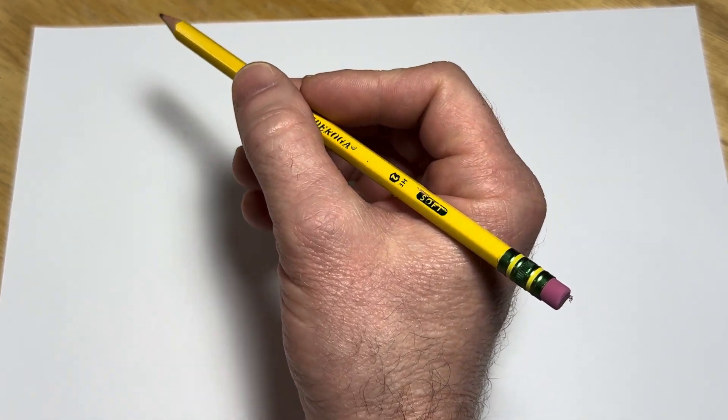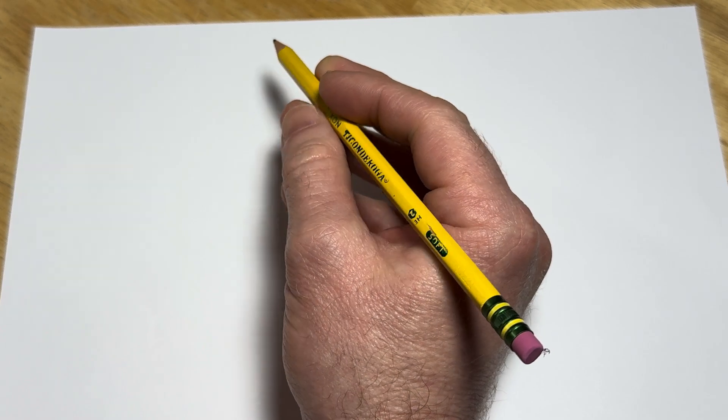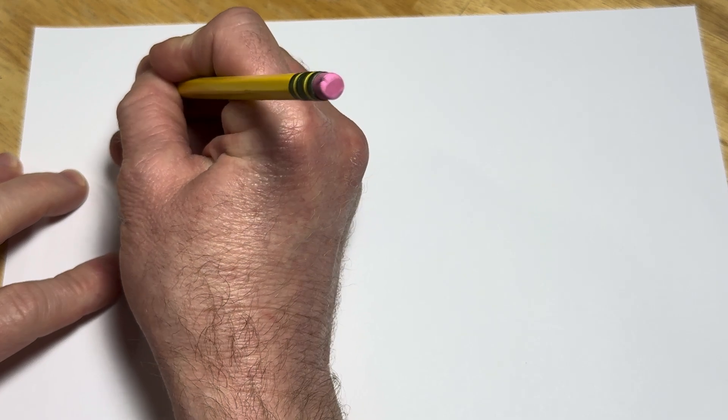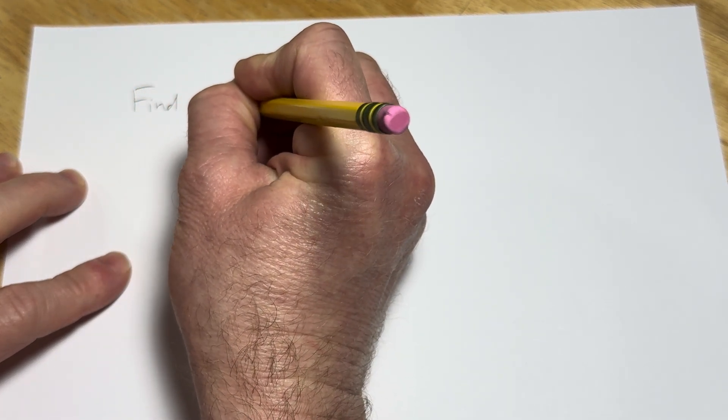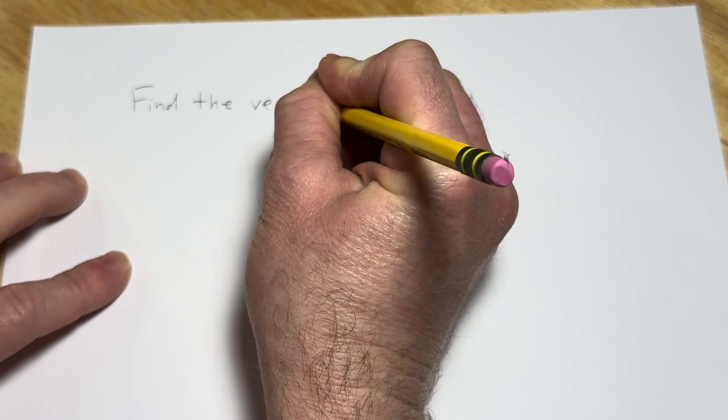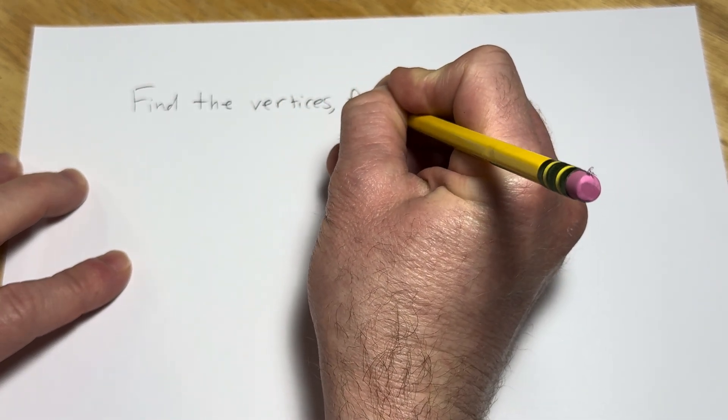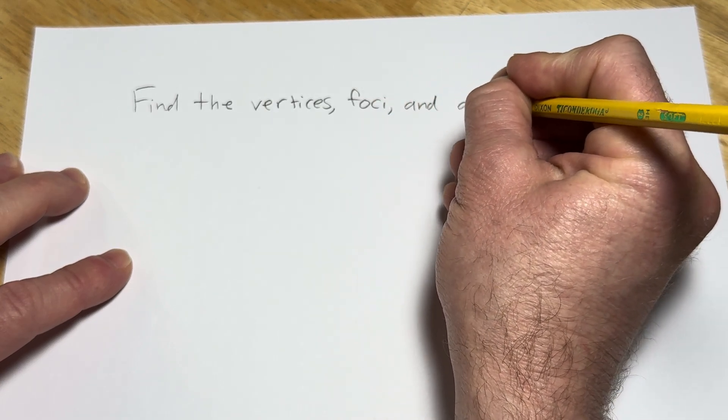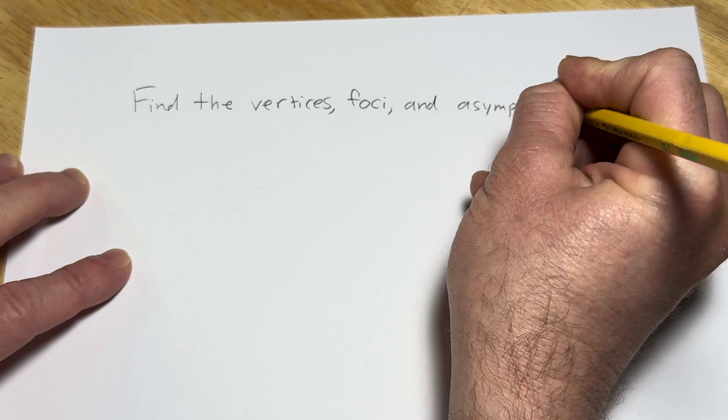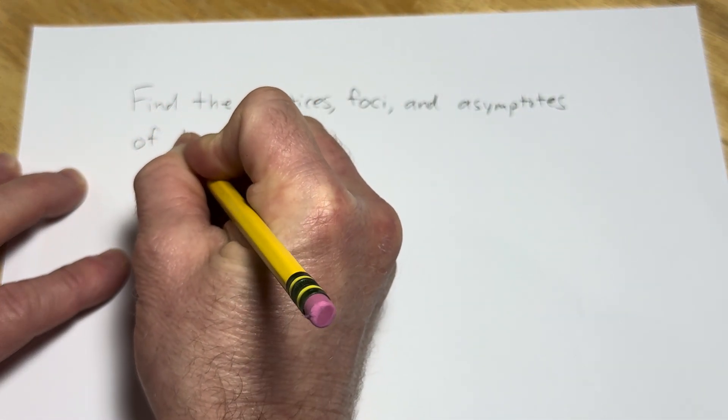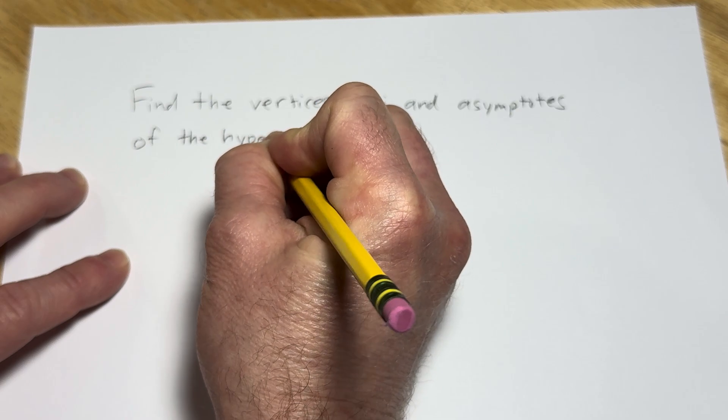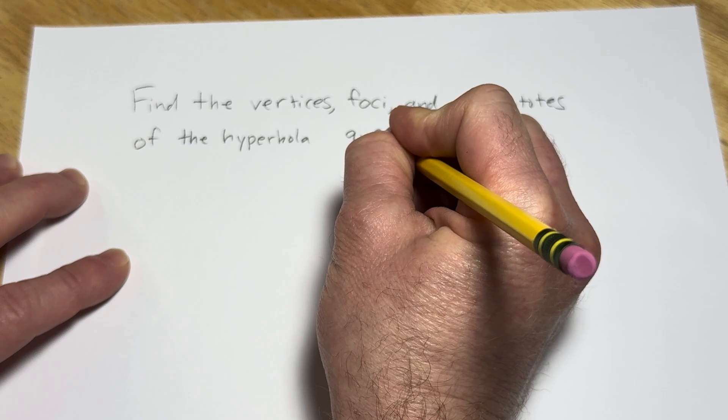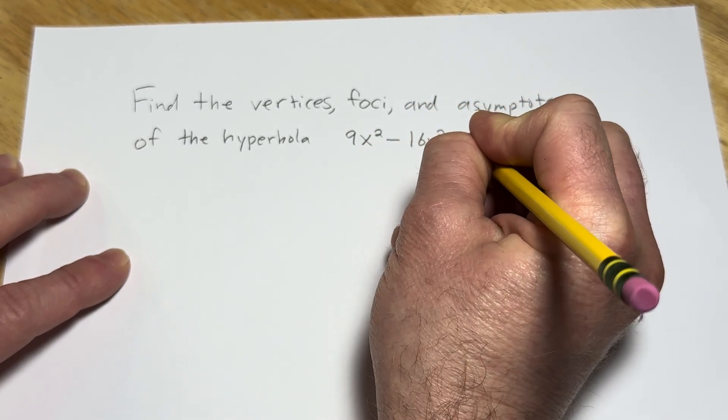Hello everyone. In this video I'm going to show you how to find the vertices, the foci, the asymptotes, and how to graph a hyperbola. So the question is going to be find the vertices, foci, which is the plural of focus, and asymptotes of the hyperbola. And the hyperbola in this example is 9x squared minus 16y squared equals 144.